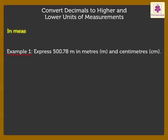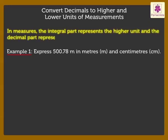Here, in measures, the integral part represents the higher unit and the decimal part represents the lower unit. Here, 500 is the integral part and hence forms the meters, and 78 is the decimal part which forms the centimeters.